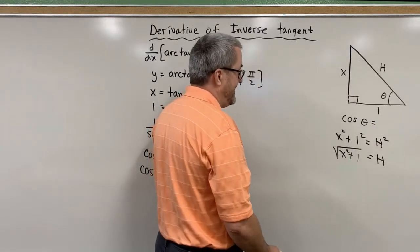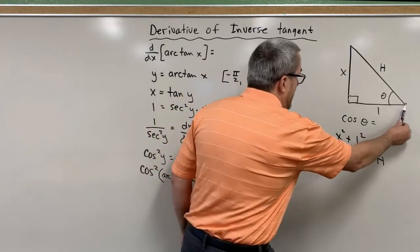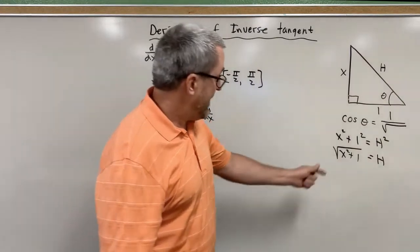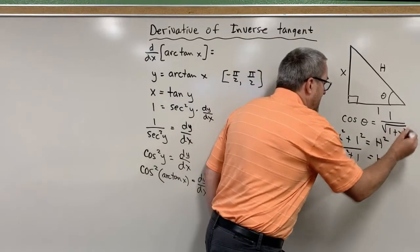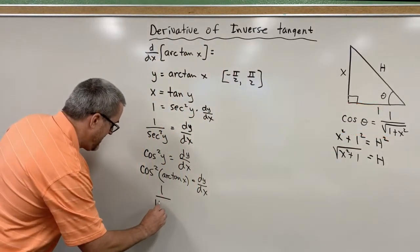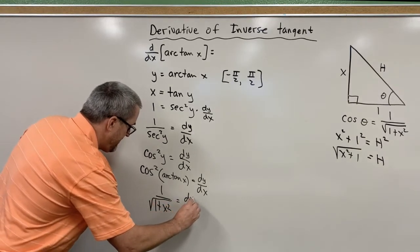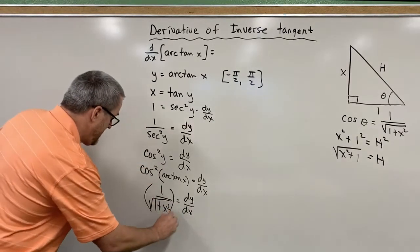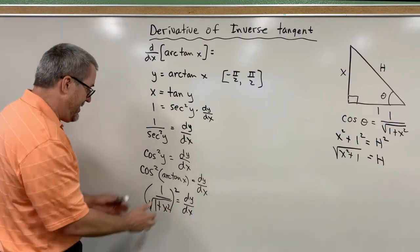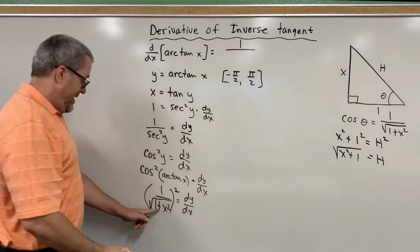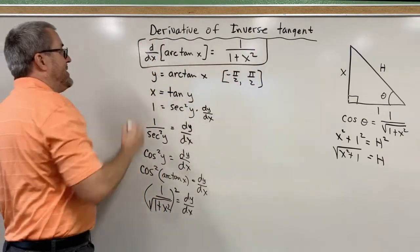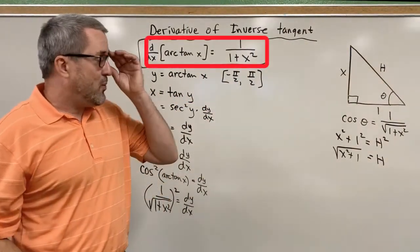So cosine would be the adjacent side over the hypotenuse — that ratio is 1 over the square root of 1 plus x squared. The cosine of the angle whose tangent is x is 1 over the square root of 1 plus x squared. But we need the cosine squared. The derivative of y with respect to x is this ratio squared, so squaring gives us a numerator of 1 and a denominator of 1 plus x squared. So the derivative of the arc tangent of x is 1 over 1 plus x squared.